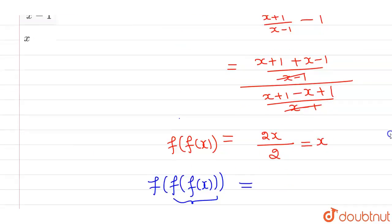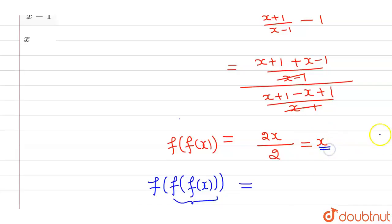I have to put f of f of x which is nothing but x. So f of f of x will be equals to f of x which is nothing but x plus 1 divided by x minus 1. So this is our final answer.